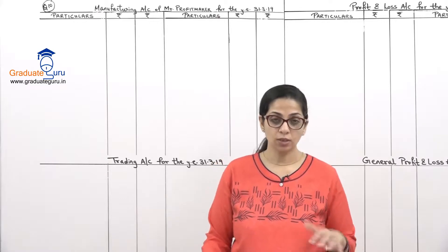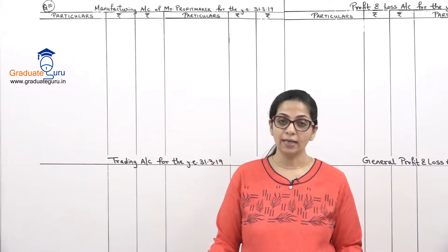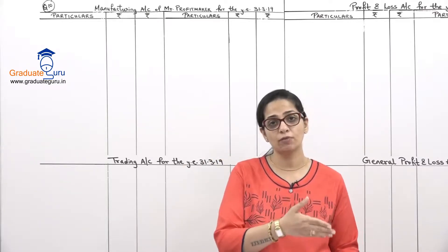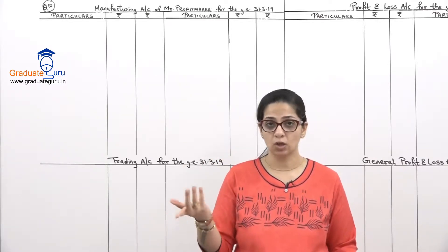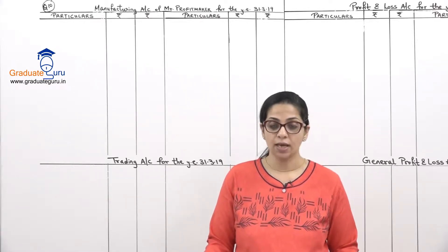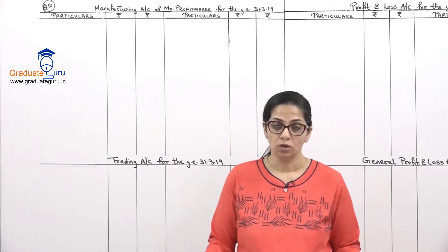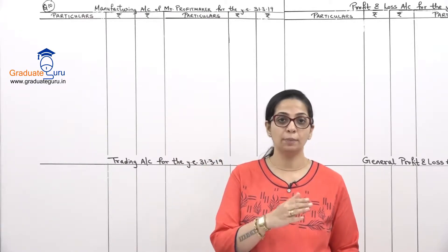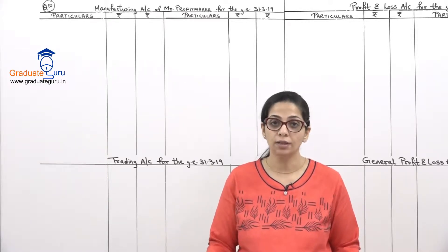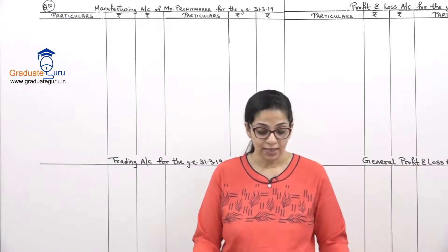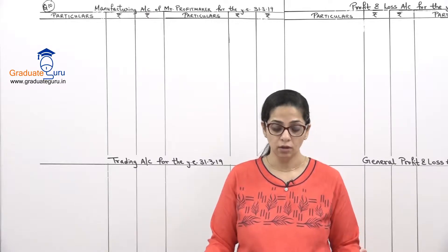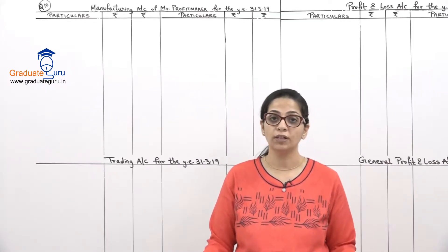Cash at bank - that was the debit side. On the credit side we have capital, sundry payables. Just as receivables are assets, payables become liabilities - it includes your creditors. Loan at 12% from bank - the rate is given, and we have not seen any interest expense on the debit side, so obviously this is going to be our hidden adjustment. Sales is there, sale of scrap is there, and commission - commission is an income which we will record in the profit and loss account.